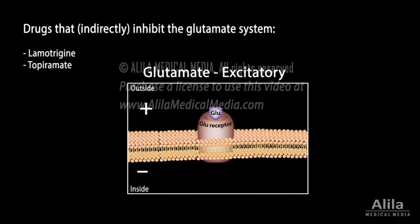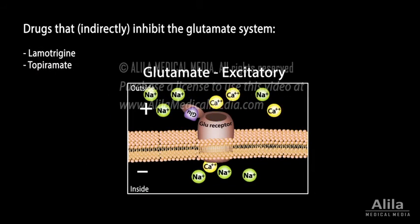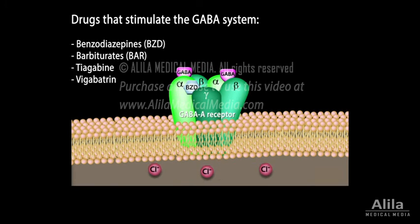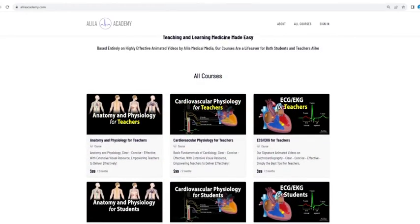Some newer drugs seem to act by inhibiting the glutamate system. And finally, a group of drugs acts to stimulate the GABA system. Benzodiazepines bind to the GABA-A receptor, a chloride channel, and facilitate its binding to GABA, thus potentiating GABA's inhibitory effect. Barbiturates keep the chloride channel open for a longer period of time. Tiagabine inhibits GABA reuptake from synapses, and vigabatrin inhibits GABA degradation.